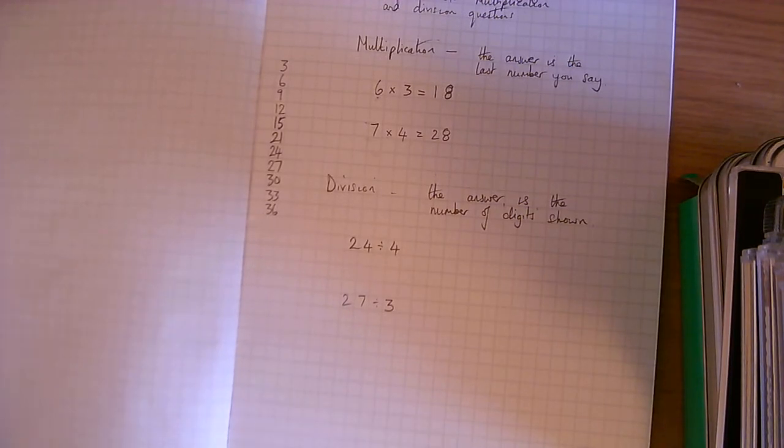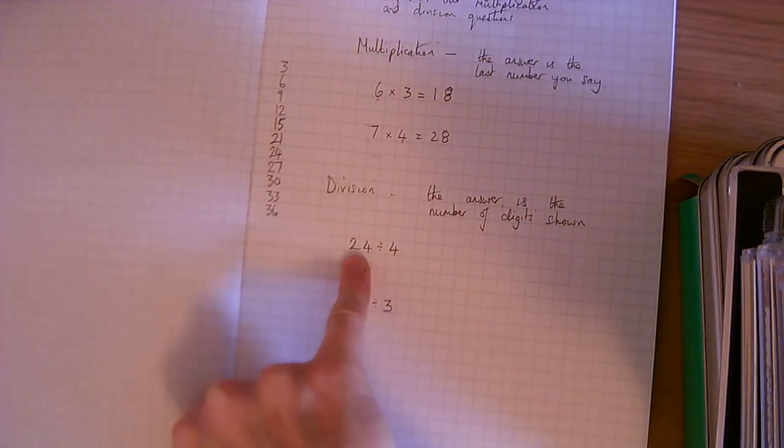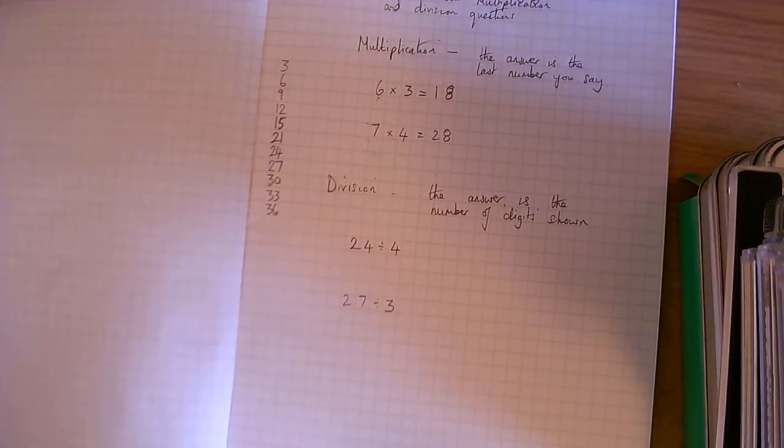So with division, it's pretty much the same method. But the answer is going to be the number of digits we have on our hand. And we're going to stop counting when we get to this number. So 4 times table.